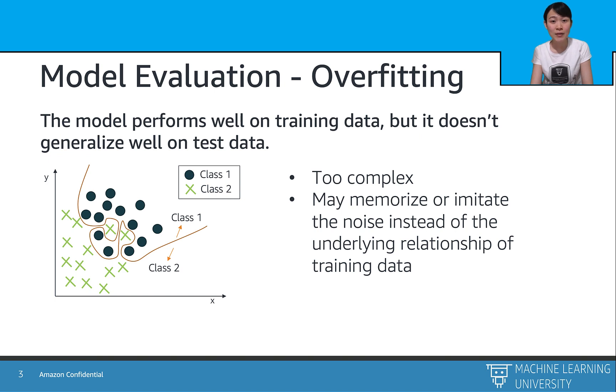This case often happens because the model is too complex. Like the plot showing on our left-hand side, this means the model might memorize the noise of the training set rather than capturing the underlying relationship between the features. In this case, the model may have relatively large feature size compared with the training dataset. So you can either add more data to the training dataset or downgrade the model complexity.